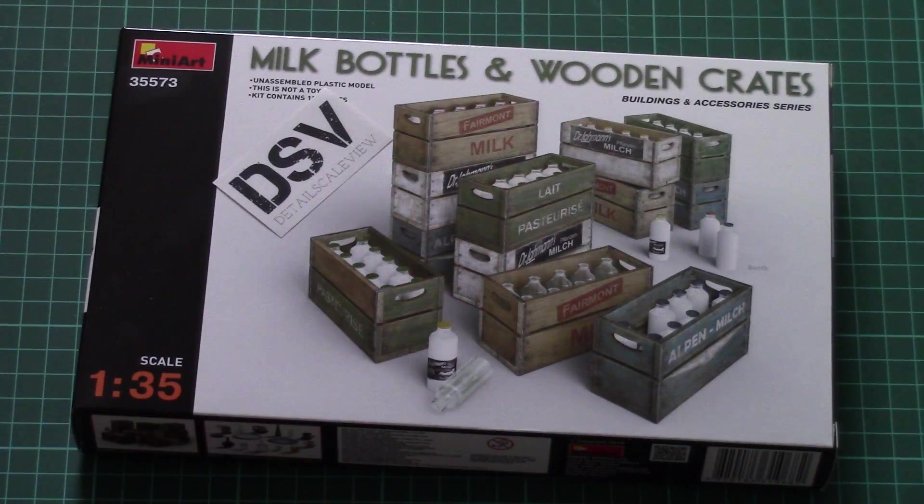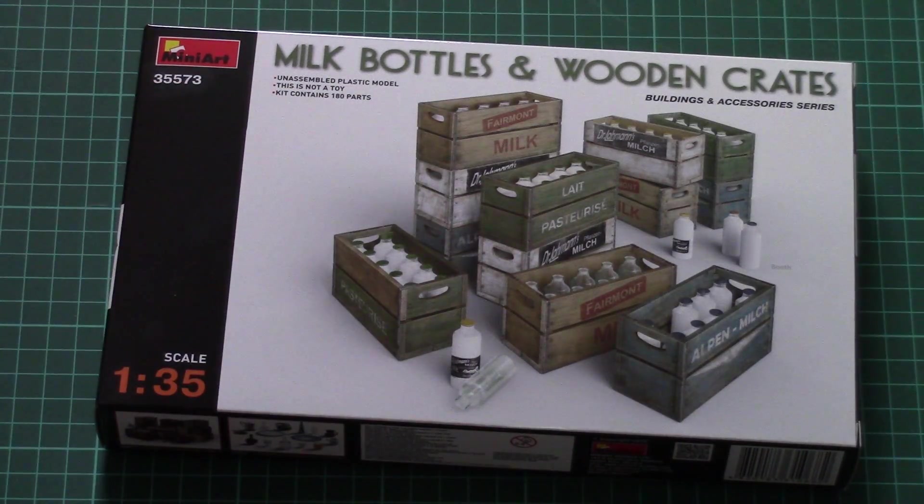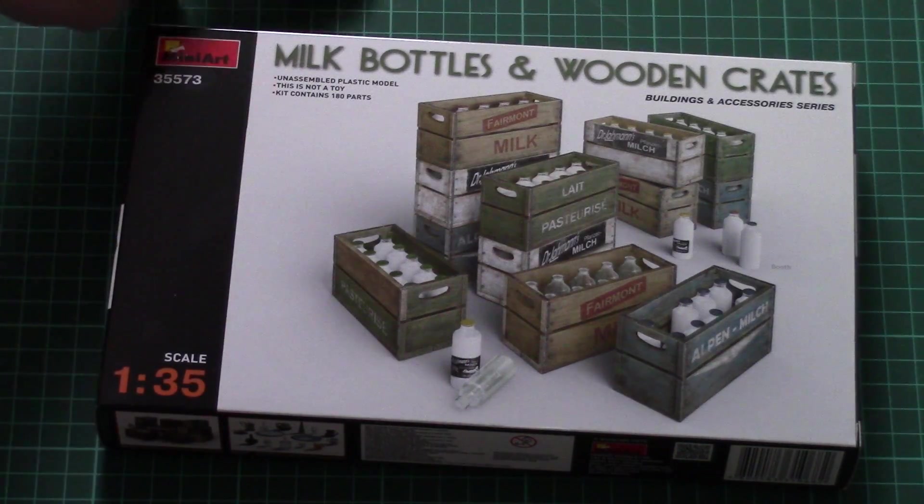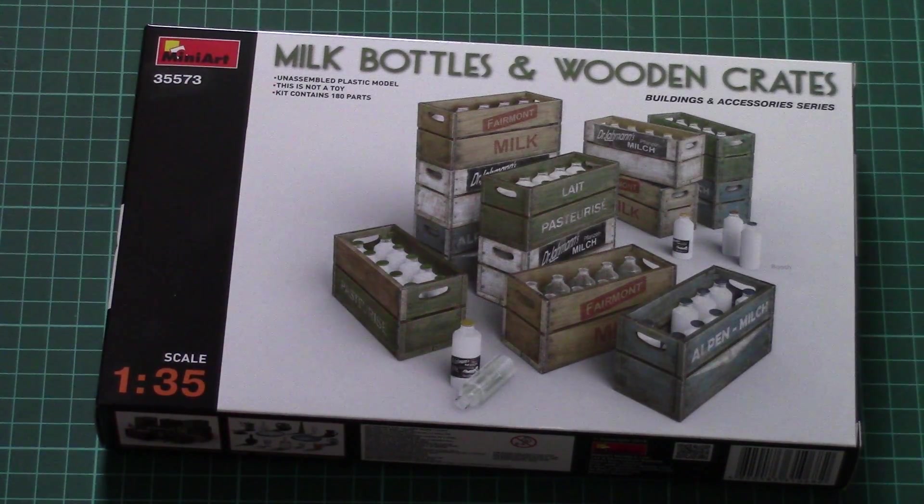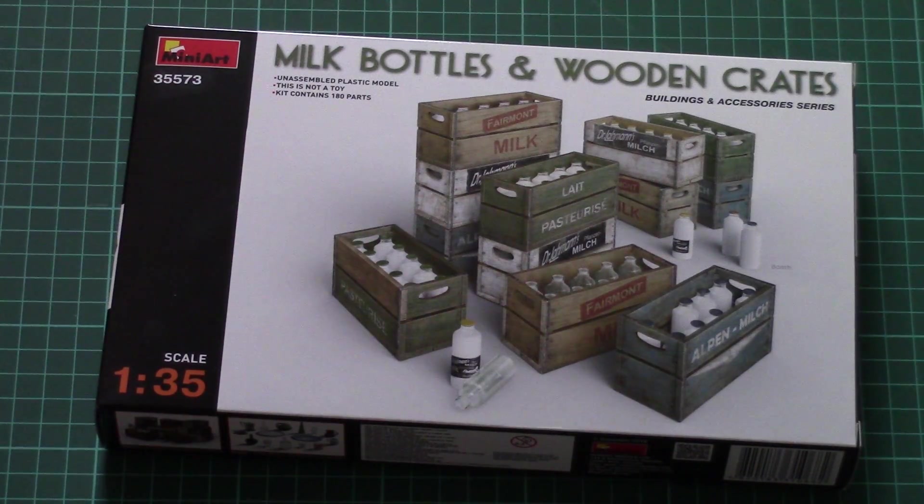As you can see, this is a newcomer from MiniArt which is modeled in 1:35 scale. It is part of the Buildings and Accessories series. It's a milk bottles and wooden crates set which actually copies everything what is depicted on the box art.